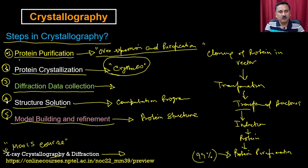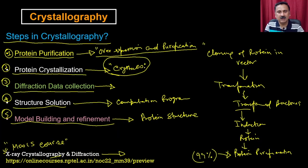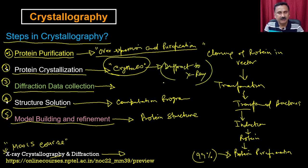In step two you do protein crystallization so that you can develop a crystal, and that crystal is going to diffract X-rays, and that is what is going to give you the diffraction data.